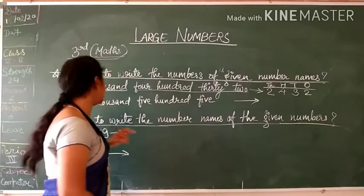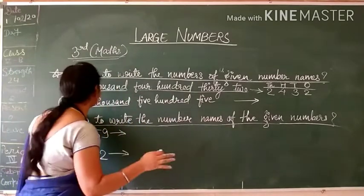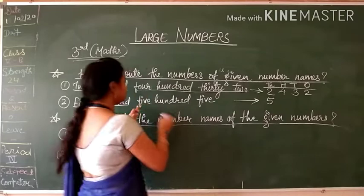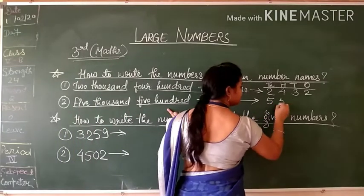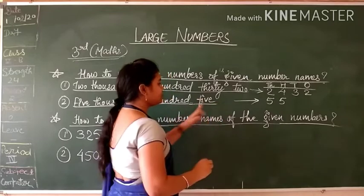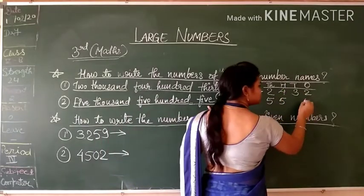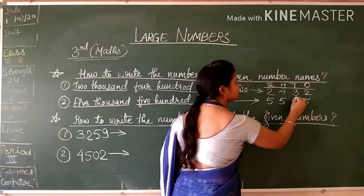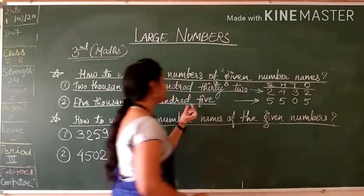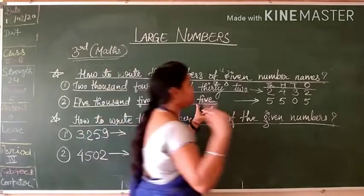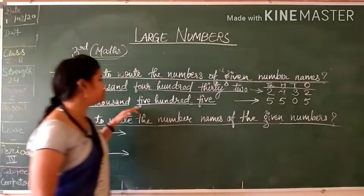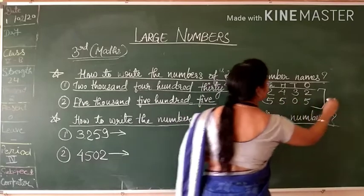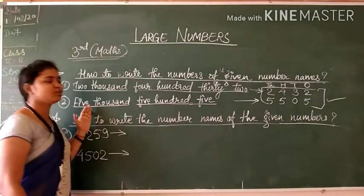Again the second example: this is 5,505. 5000 means 5 in the thousands place. 500 means 5 in the hundreds place. And the last part is just 5 — a single digit 5, meaning 0 in the tens place and 5 in the ones place. It is not a 2-digit number, only a single digit. So these two answers you have got from the given number names in a very easy manner.